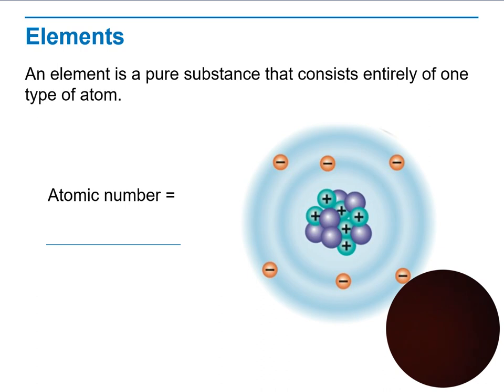Now, atomic number. When we talk about elements, we need to know about the atomic numbers. Now, what is the atomic numbers? An element is a pure substance that consists entirely of one type of atom, either oxygen or oxygen. Carbon, hydrogen, it's only a consist of one.